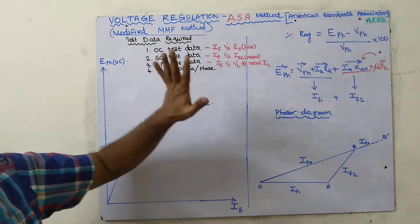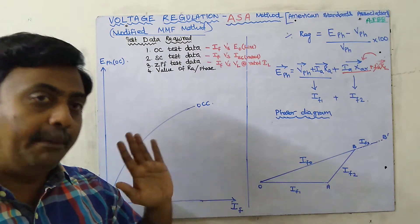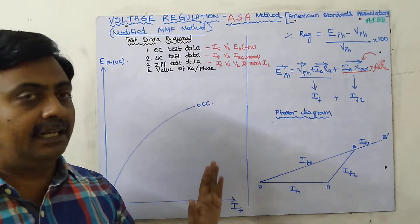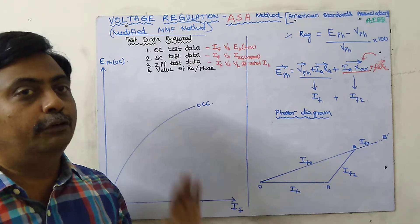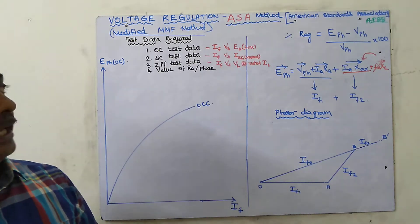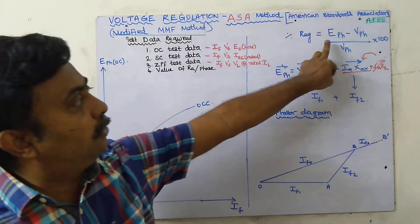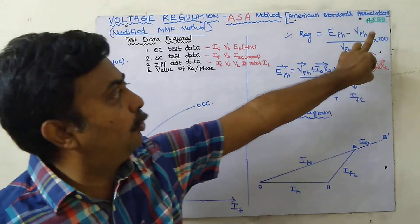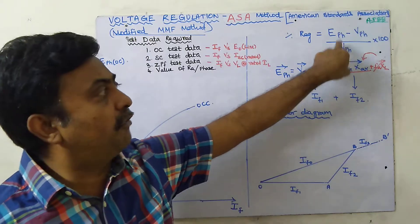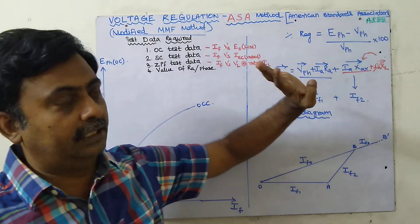To use this method, we should know the MMF method as well as the ZPF method — both the calculations and procedure. Then only we can do the calculation for this method. What is voltage regulation? Voltage regulation equals no-load voltage minus load voltage divided by load voltage, into 100. All quantities are phase quantities.